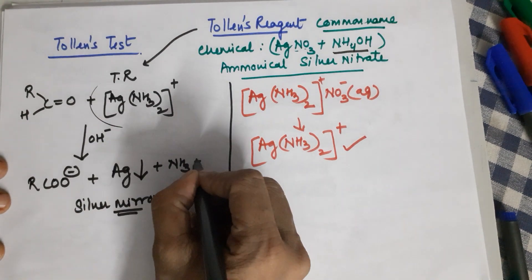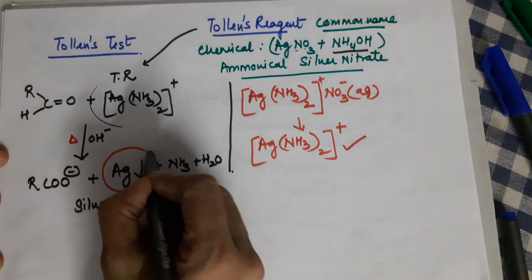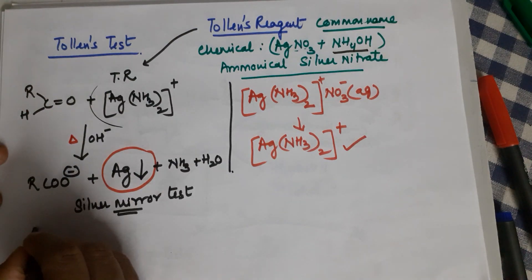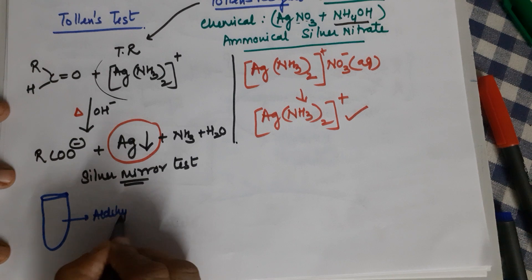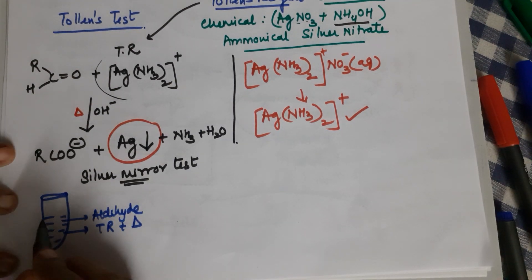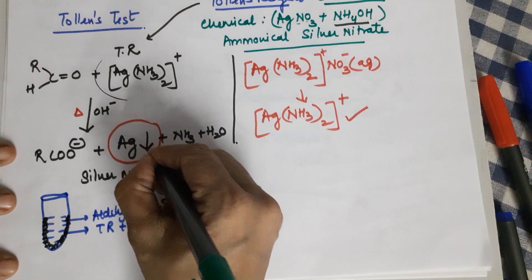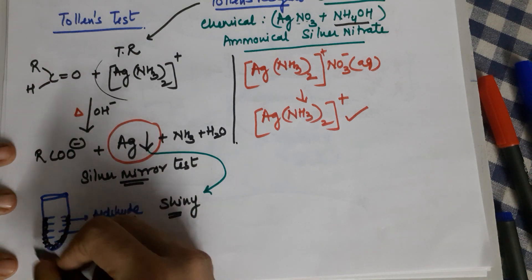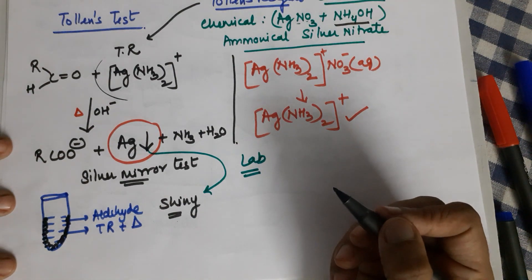The by-products are ammonia and water. If you take your aldehyde in a test tube, add the Tollens reagent, and heat it a little, you will find silver deposited on the surface of your test tube — the whole test tube starts appearing shiny. Because of the silver formed, you can actually see your face in the test tube. This test is also done in the class 12 lab as one of your practicals for functional group testing of organic compounds.